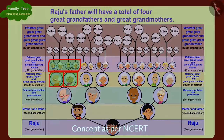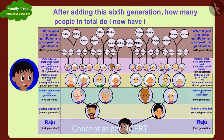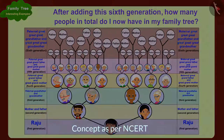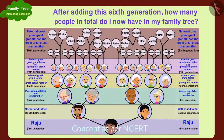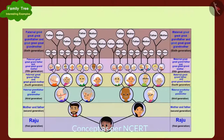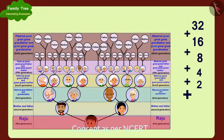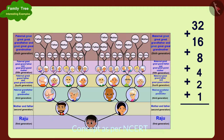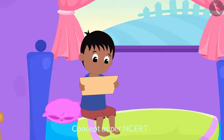After adding this sixth generation, how many people in total do I have now in my family tree? Children, can you find a solution to Raju's question? If you want, you can stop the video and find the answer. First, we will write down the number of people present in every generation, then add the number of people from all these generations. In this way, Raju's family tree has a total of 63 people.